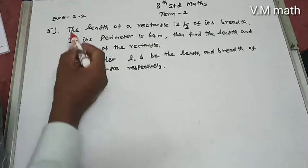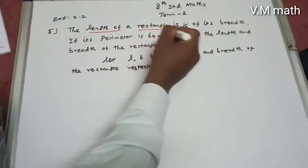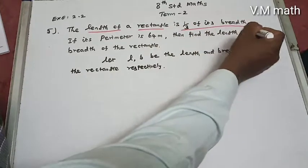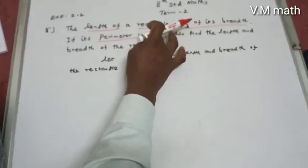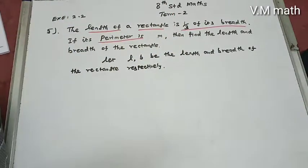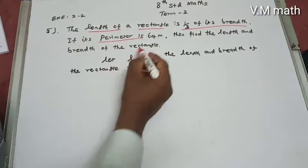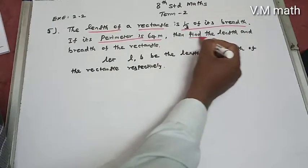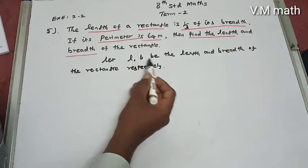Exercise 2.2, question number 5. The length of the rectangle is 1 by 3 of its breadth. The condition is that its perimeter is 64 meters. Find the length and breadth of the rectangle.